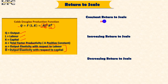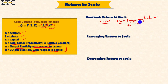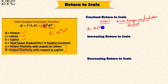Constant return to scale occurs when alpha plus beta is equal to 1, which is the linear homogeneous production function, or homogeneous production function of degree 1. This means if inputs increase proportionally, output increases by the same proportion. Note that many people also write Q equals A · L^alpha · K^(1-alpha), where beta equals 1 minus alpha, which applies specifically when alpha plus beta equals 1.